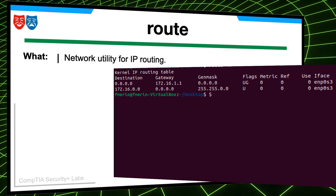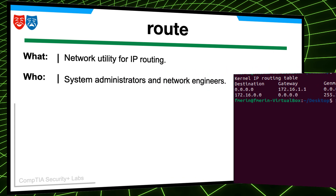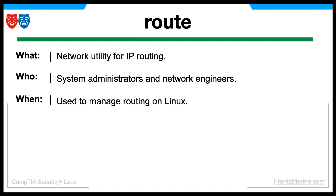So what is Route? The Route command in Linux is a networking utility used to display or manipulate the IP routing table. The command is used by system administrators, network engineers, or users with sufficient privileges to manage the network configuration on a Linux system. The command can be used whenever there is a need to view or modify the IP routing table on a Linux system, which may occur during network setup, troubleshooting, or changes in network connectivity.